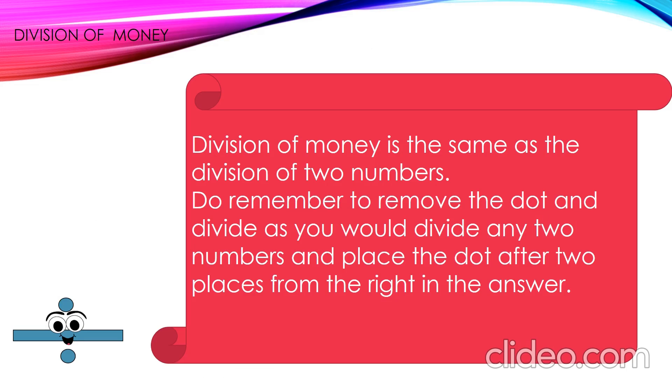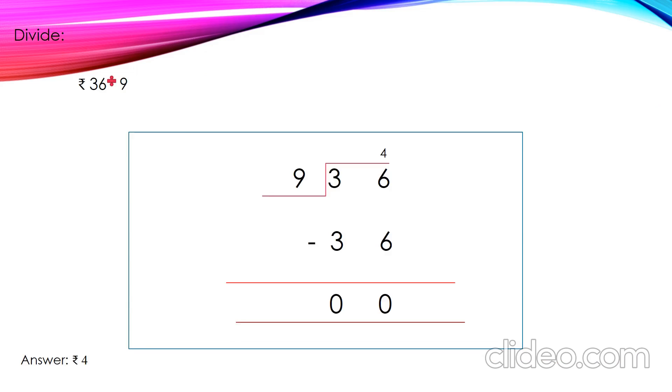Let's see what it is. Division of money is the same as the division of two numbers. Do remember to remove the dot and divide as you would divide any two numbers and place the dot after two places from the right in the corner. Come on. Let's divide. 36 rupees divided by 9. 36 divided by 9. You all know now how to divide. So, we will get the product 36 by multiplying 4 with 9. So, 4 9's are 36. 36 minus 36, 0. So, the answer here is rupees 4. Don't forget to put rupees before the answer.